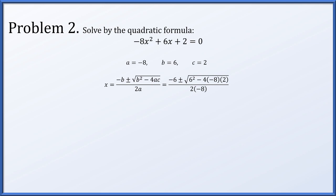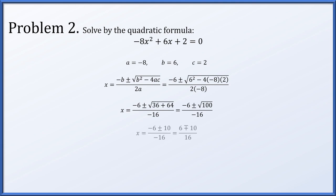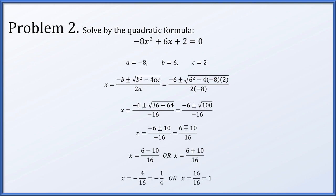With b equals 6, a equals negative 8, and c equals 2, we plug all of those in. Under the radical we have 6 squared minus 4 times negative 8 times 2, which becomes 36 plus 64, equaling 100. The square root of 100 is 10. So we have negative 6 plus or minus 10 over negative 16. Factoring out a negative one from numerator and denominator and canceling, we get 6 minus 10 over 16 or 6 plus 10 over 16, giving us two values of x: negative one quarter or 1.